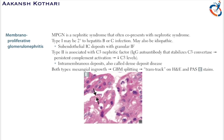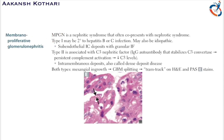Now let's talk about membranoproliferative glomerulonephritis, which is a nephritic syndrome that co-presents with nephrotic syndrome. It occurs in two types. Type 1 may be secondary to hepatitis B or hepatitis C infection, or it may be idiopathic. In type 1, there is sub-endothelial immune complex deposition with granular immunofluorescence due to immune complex deposition in the sub-endothelial cells.